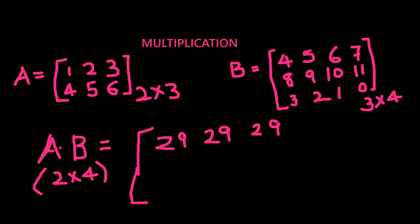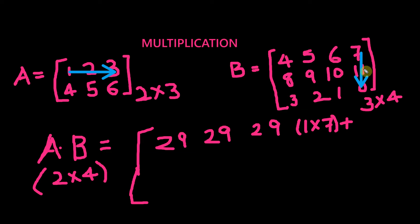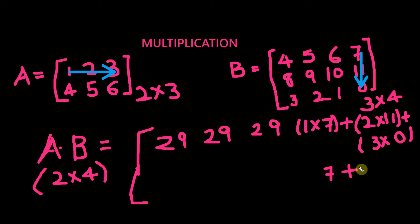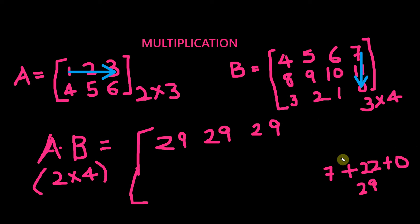Next, we need to get the first row, fourth column value by multiplying 1, 2, 3 with 7, 11, 0. So 1×7 plus 2×11 plus 3×0. The sum is again 29. So the first row, fourth column value is also 29.